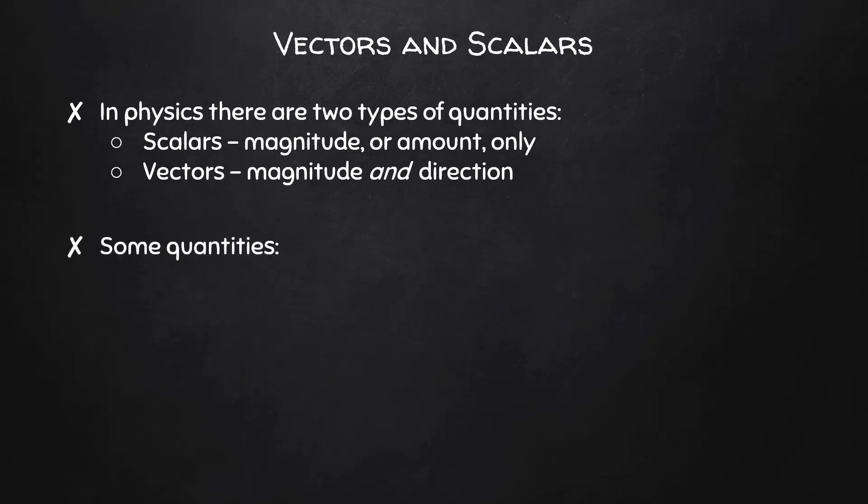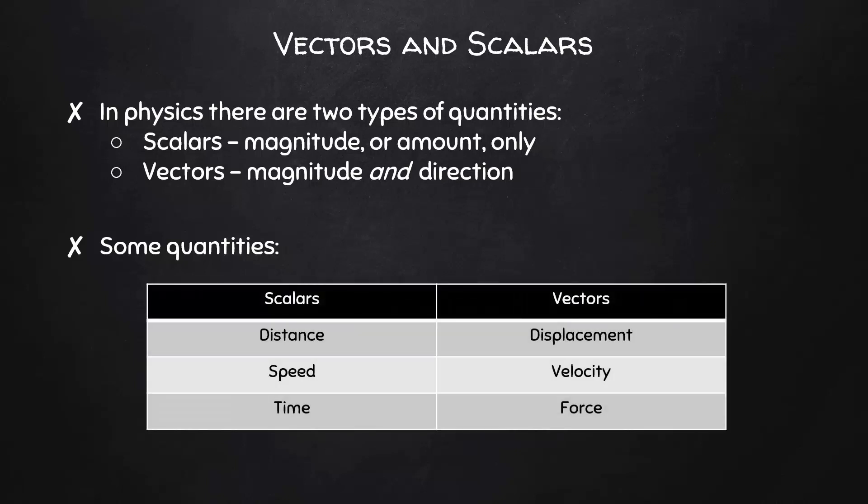Here are some of the first quantities we'll learn about. Distance, speed, and time are scalar quantities. They have only magnitude. Displacement, velocity, and force are vectors. Each of those have a magnitude and direction.